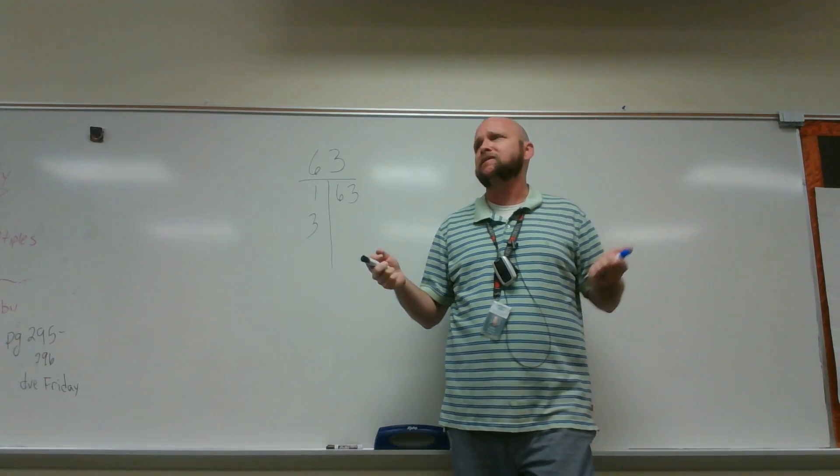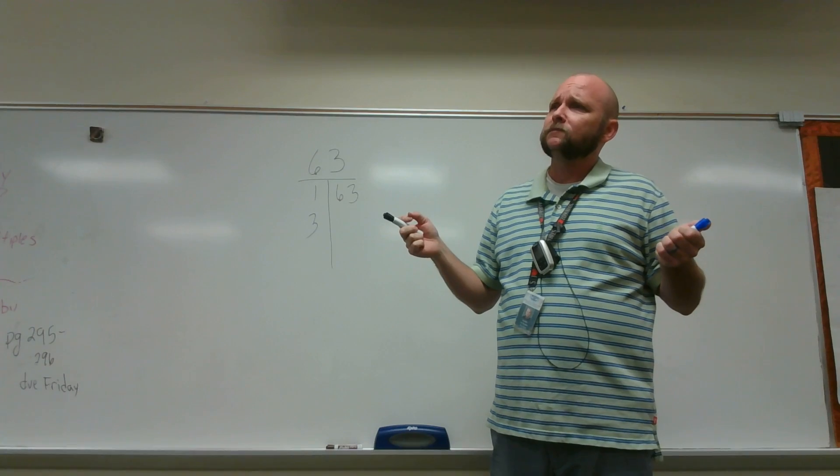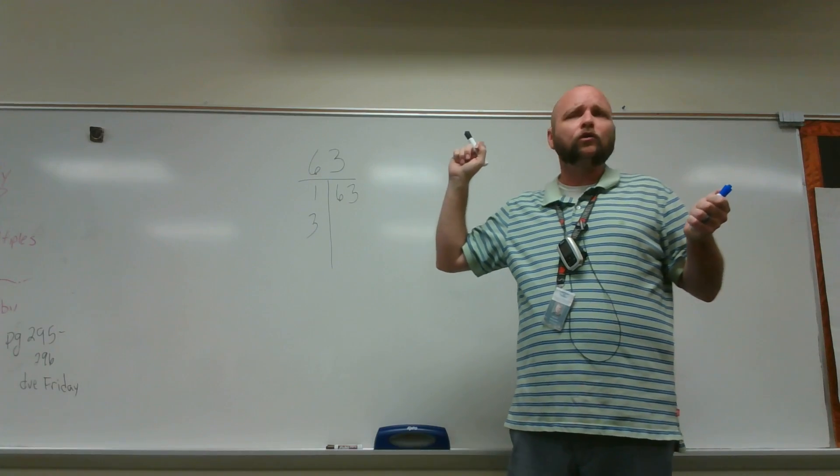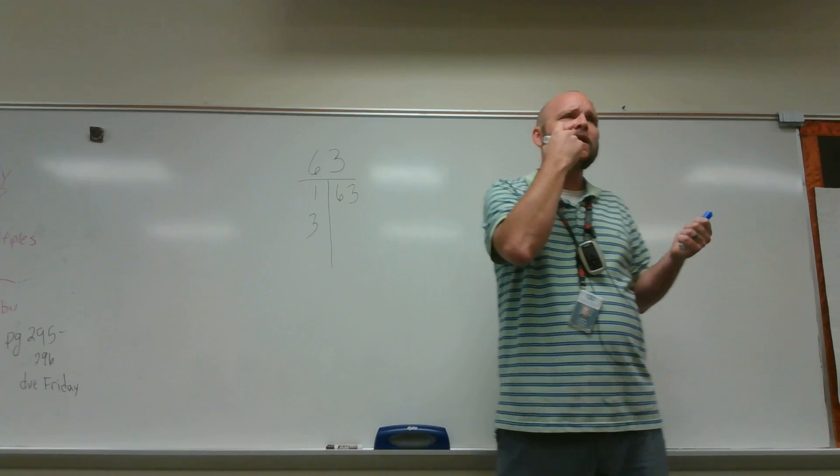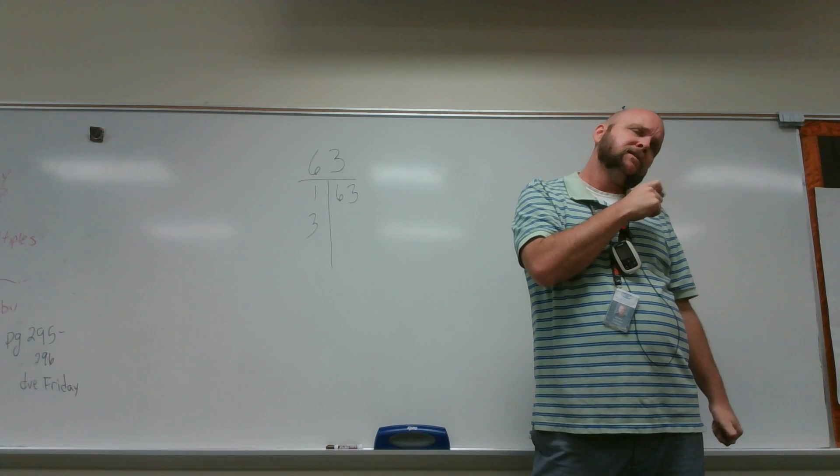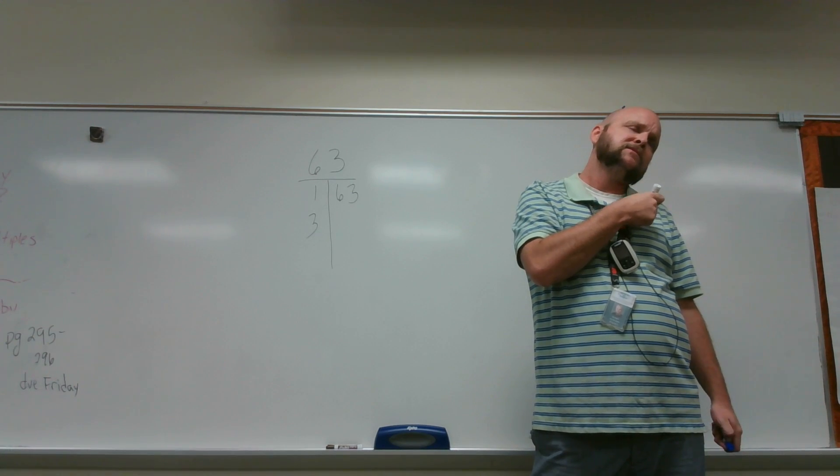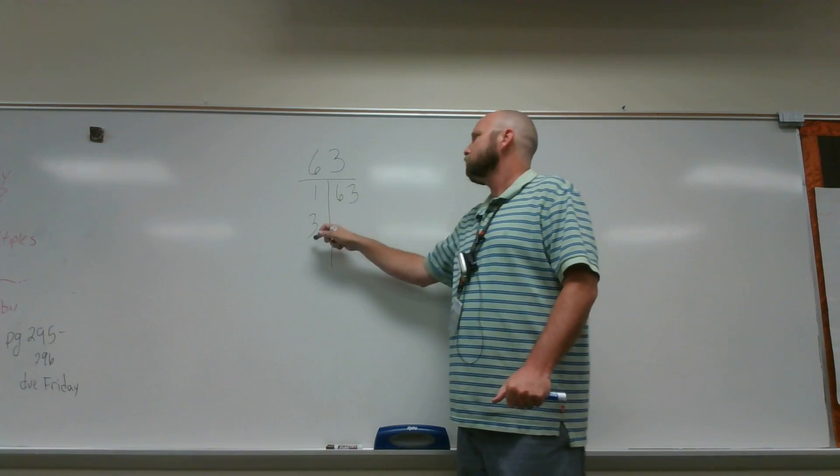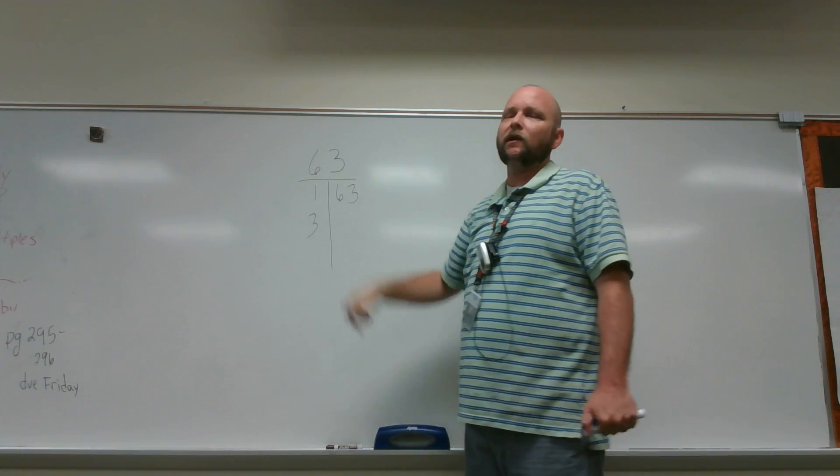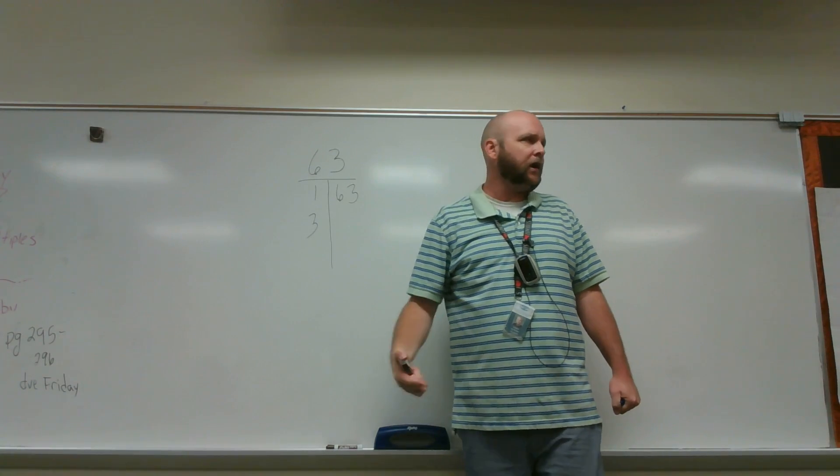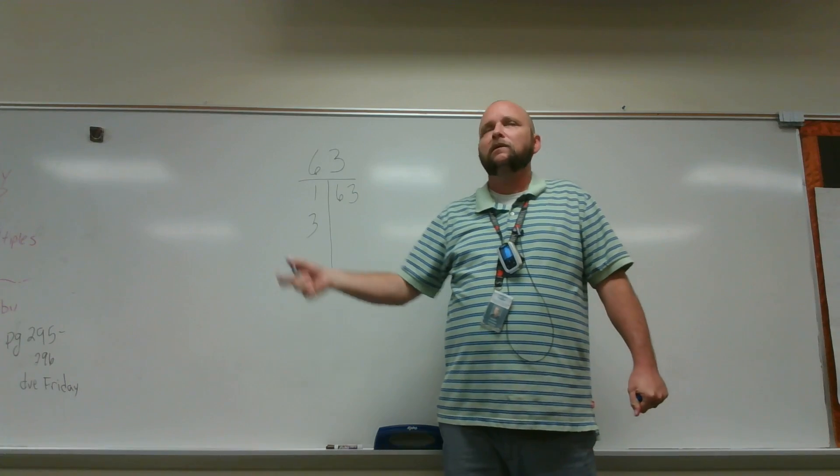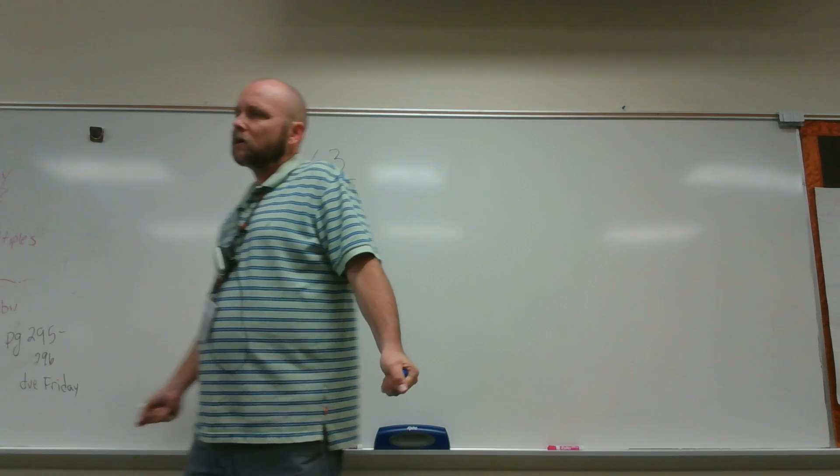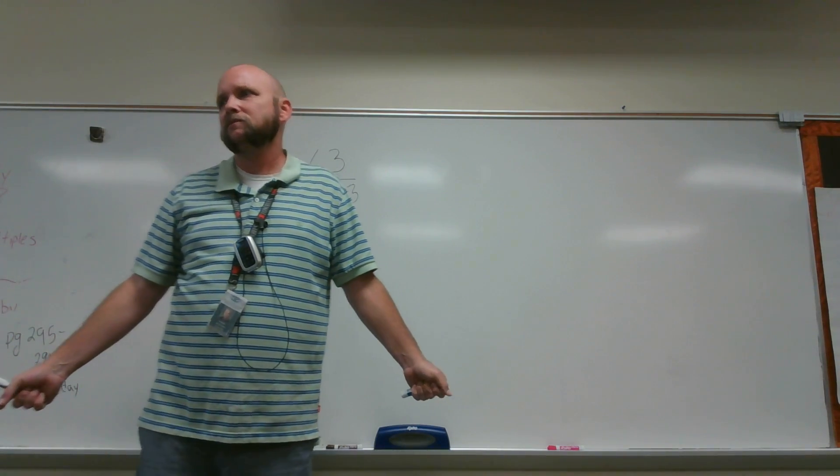Besides that we know it is. Olivia starts to answer but that's not our rule. Our rule is what, Evan, again? If the sum of the two digits add up and the sum of the two digits are a multiple of 3. So if the sum of these two digits, 6 plus 3, are a multiple of 3, then it's divisible by 3. And 6 plus 3 equals 9. 9 is a multiple of 3. It is, trust me.